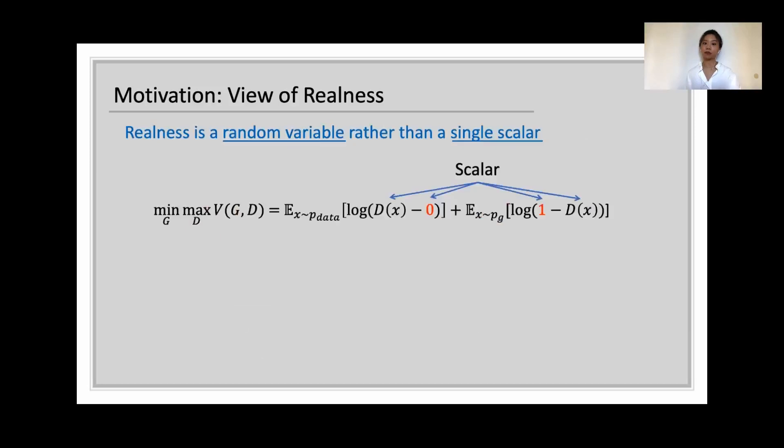Motivated by this observation, we propose to represent realness as a random variable instead of a single scalar. Here, 0 and 1 basically serve as two anchors, where 0 stands for the concept of fake and 1 stands for real. So we can simply substitute them with a0 and a1 for a more general usage.